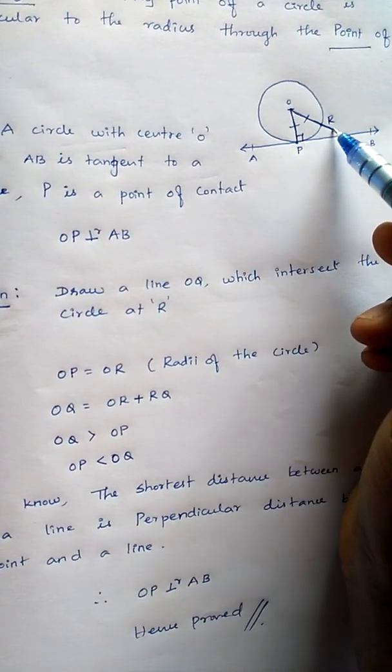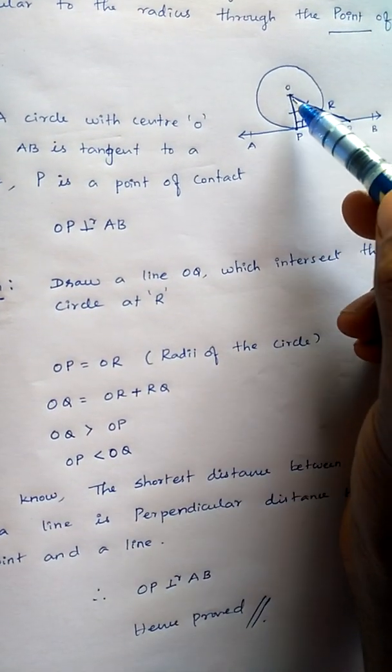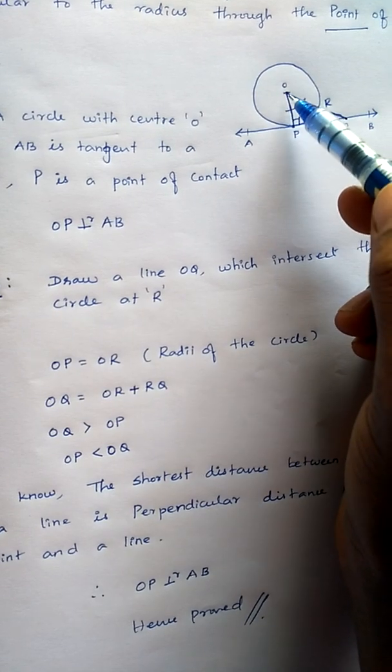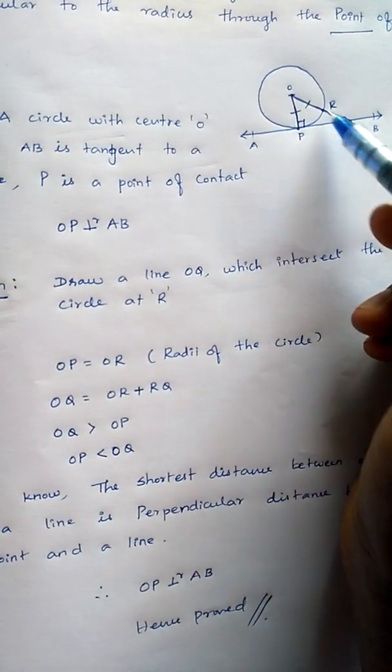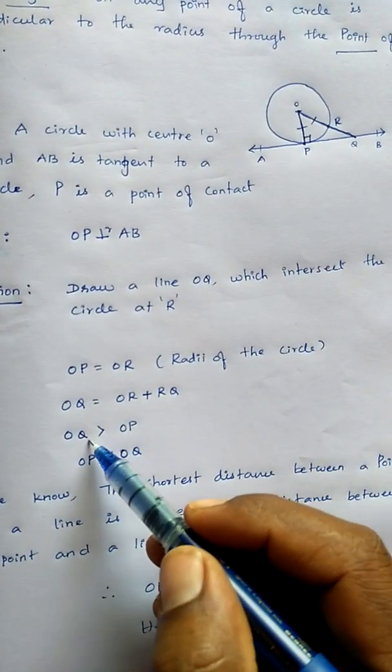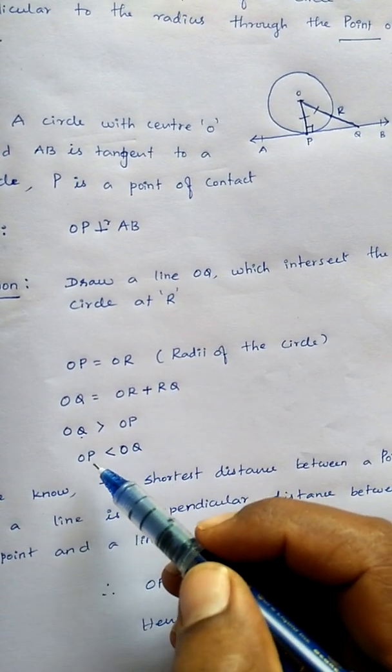When you compare this OQ line, see OQ line is greater than OP because this is the shortest line, this is the longest line. So we are taking OQ greater than OP, or we can say OP is less than OQ.